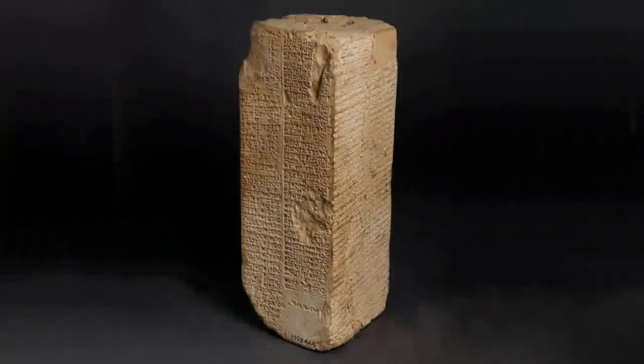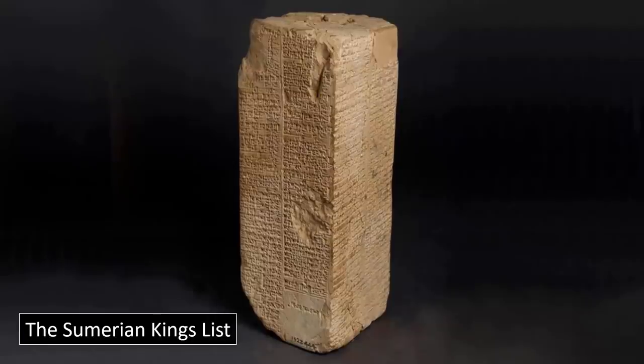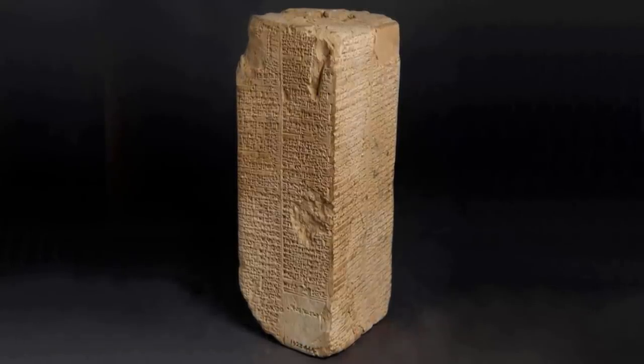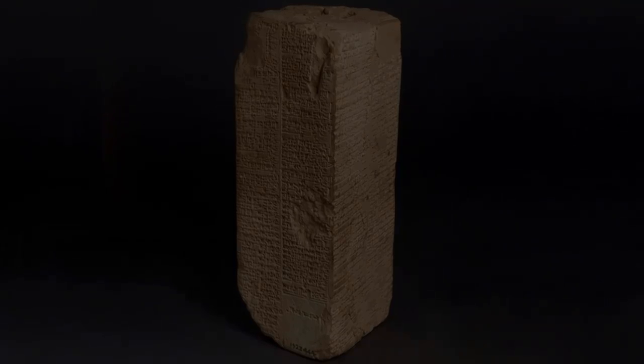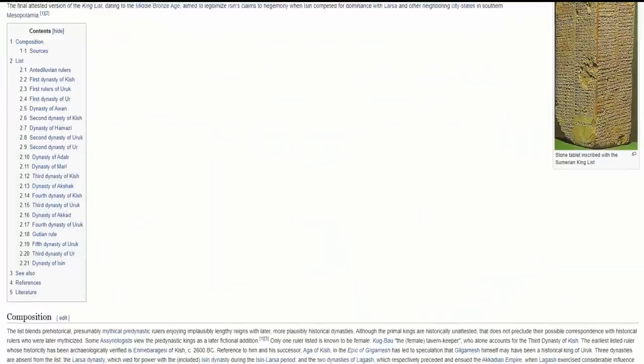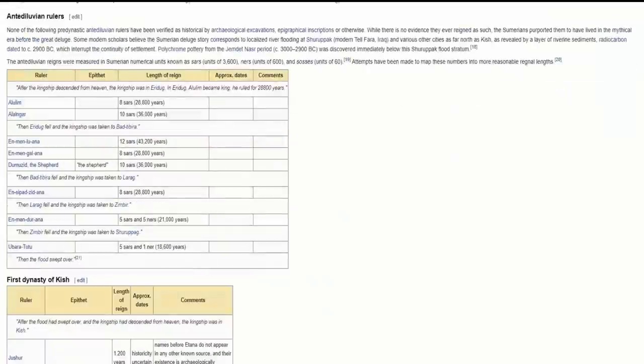Furthermore, there is a noticeable steady decline in the duration of these rulers' lives. This gradual decline, when seen in its complete translated form, if it is indeed an accurate documentation of history, displays a clear example of devolution over many thousands of years.